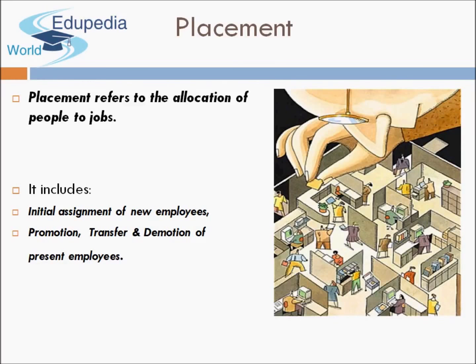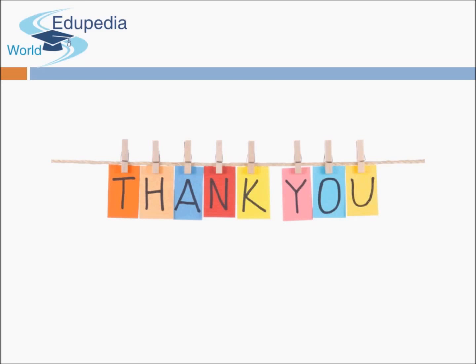Once induction is done, finally comes placement. It refers to the allocation of people to jobs — the person who has joined is placed at the right position in the organization. Placement doesn't only involve placing new recruits but also includes promotion, transfer, and demotion of current employees. With this we come to the end of recruitment and selection. Both procedures go hand in hand — first recruitment is done and then selection is done. Thank you so much for watching.